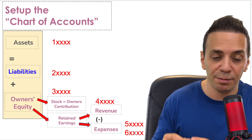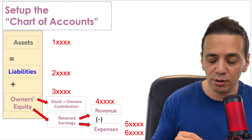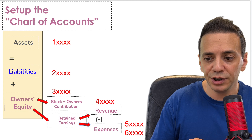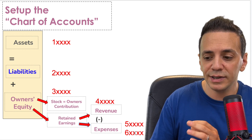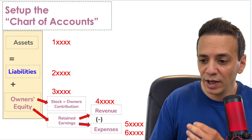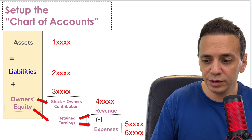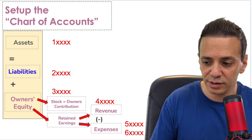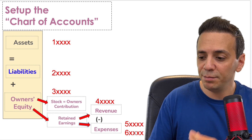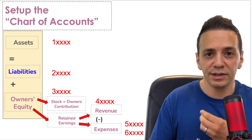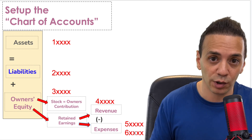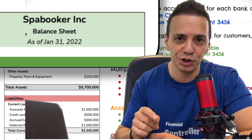In almost every situation in accounting you can bring it back to the basic accounting equation. Assets equals liabilities plus owner's equity, and within that, equity includes stock contribution and retained earnings, which includes revenues and expenses. So the main accounting equation includes all of the basic categories needed to break down a chart of accounts. Now let's go through the balance sheet and income statement to see how to set up a chart of accounts that makes life easier for accountants, management, and auditors.